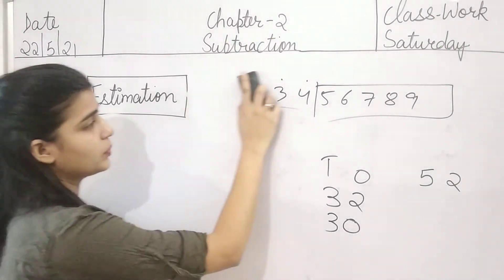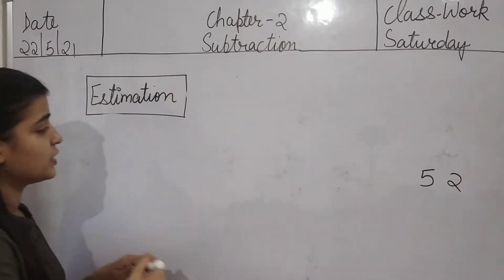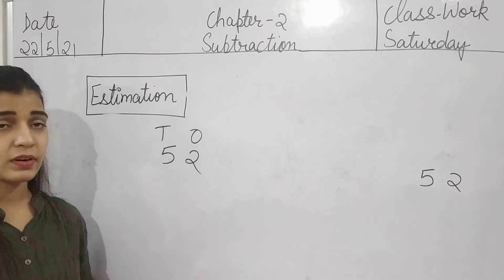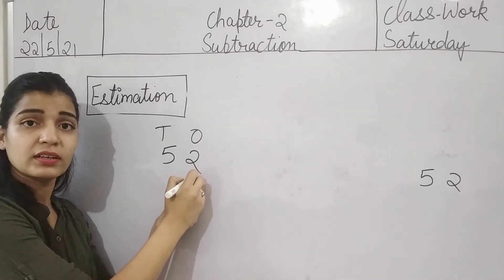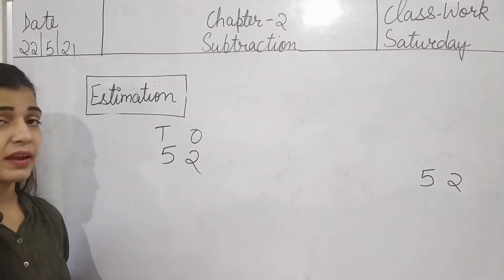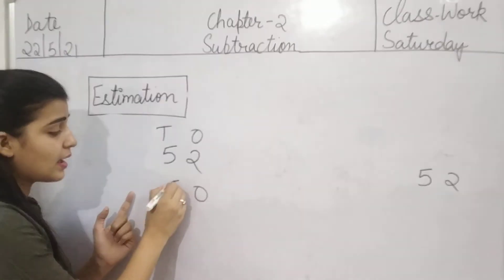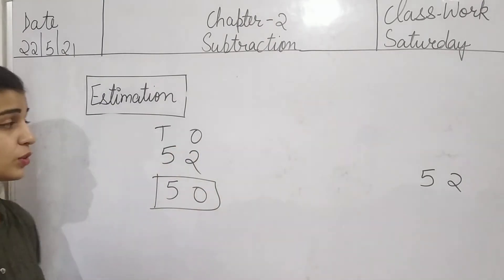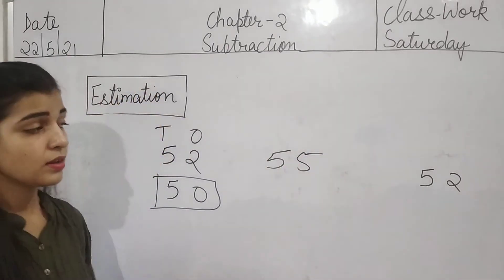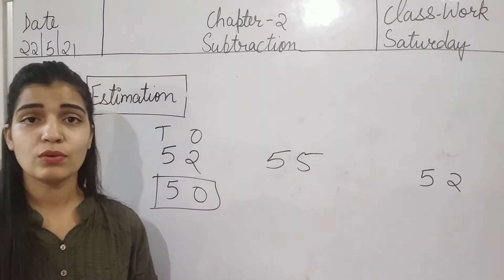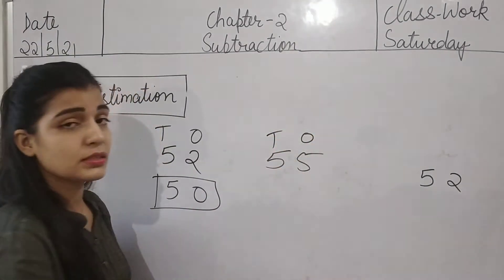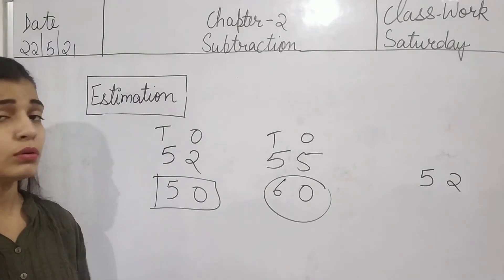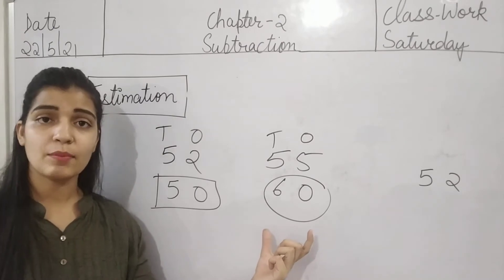Now again we will take one example. Just like we have 52. This is ones and this is tens. We are going to round off this. 52 — 2 is smaller than 5. So the ones value is less than 5, which means ones becomes 0 and tens stays as it is — 5 stays as 5, no need to change. So 52 rounds off to 50. And if I write 55 — 5 or more than 5 — tens is 5, ones becomes 0, add 1 to tens: 5 becomes 6. It means 55 is rounding off to 60.